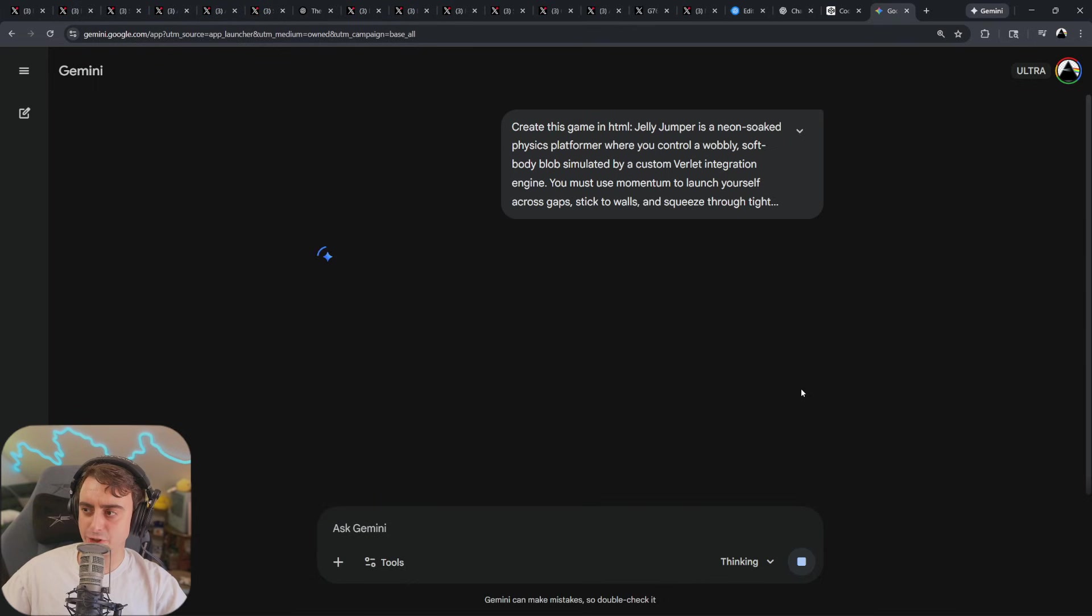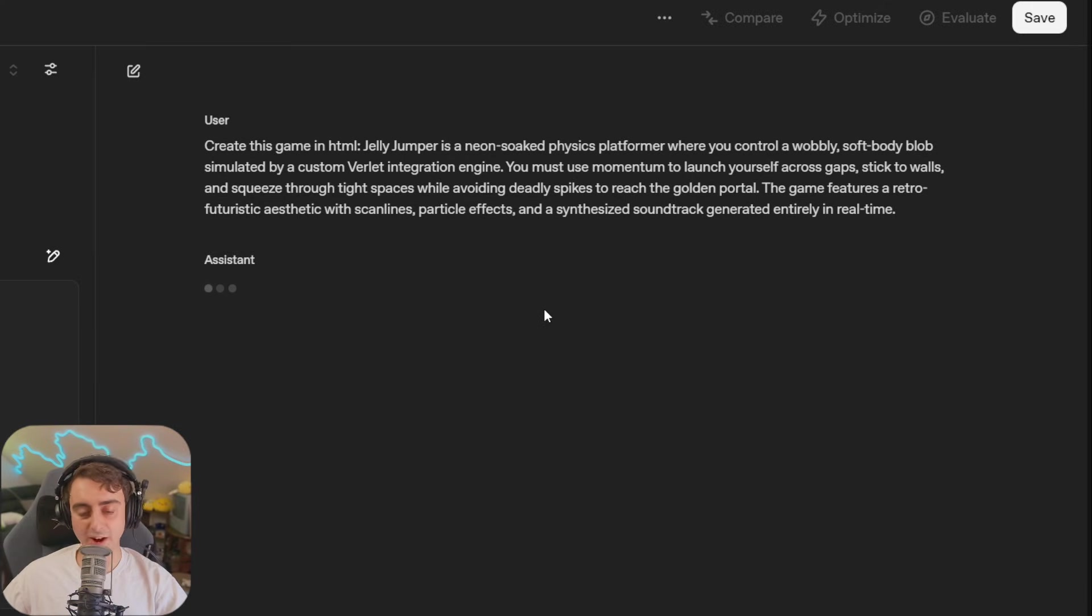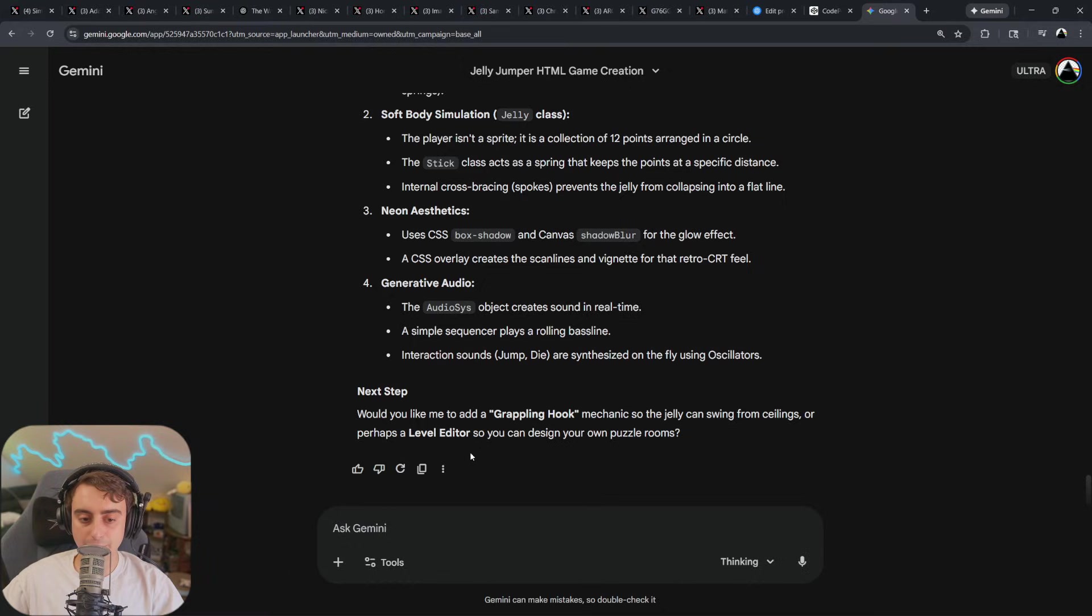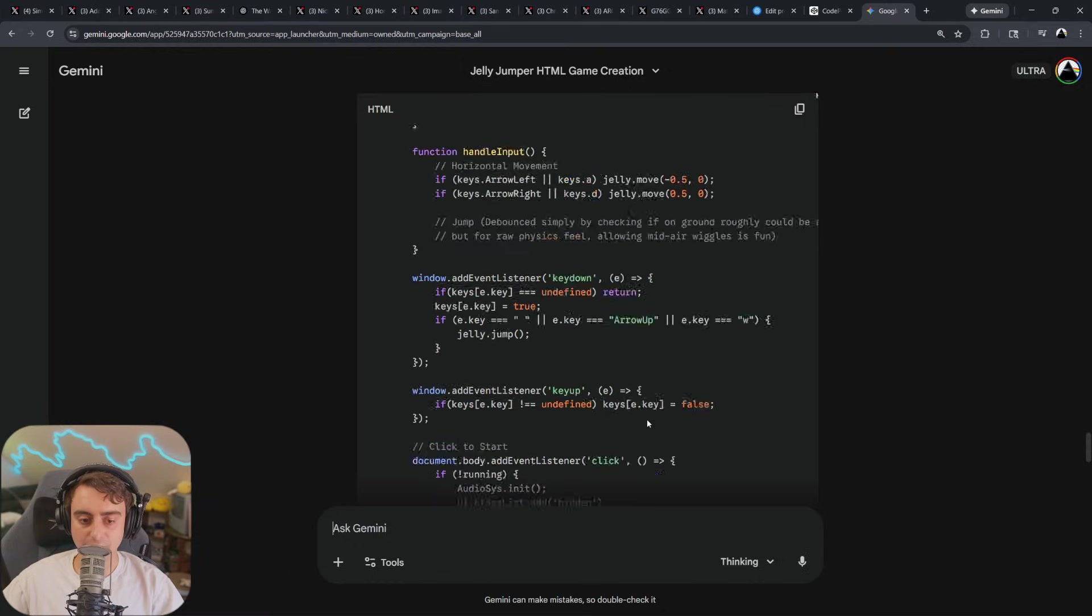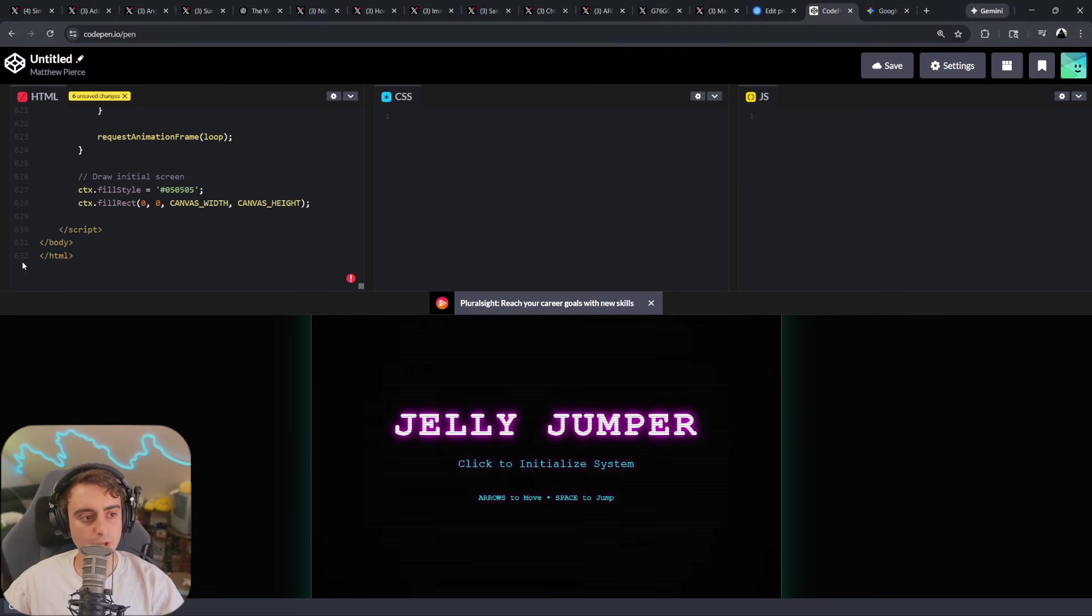I gotta say, Gemini 3 also generates very fast now. To produce its jelly jumper, we used 632 lines of code.